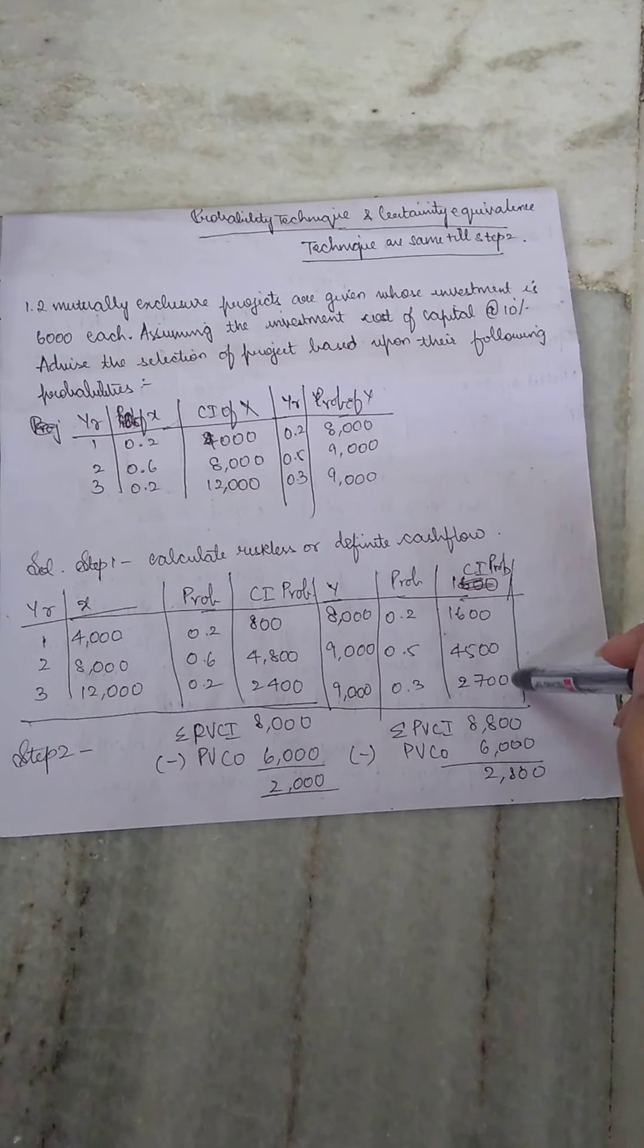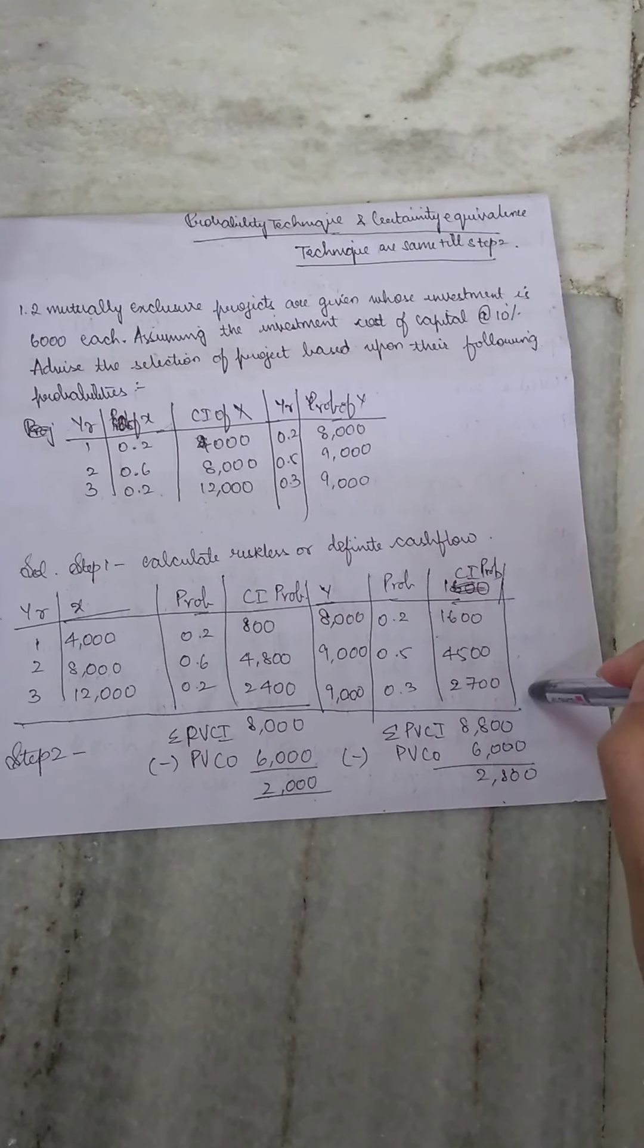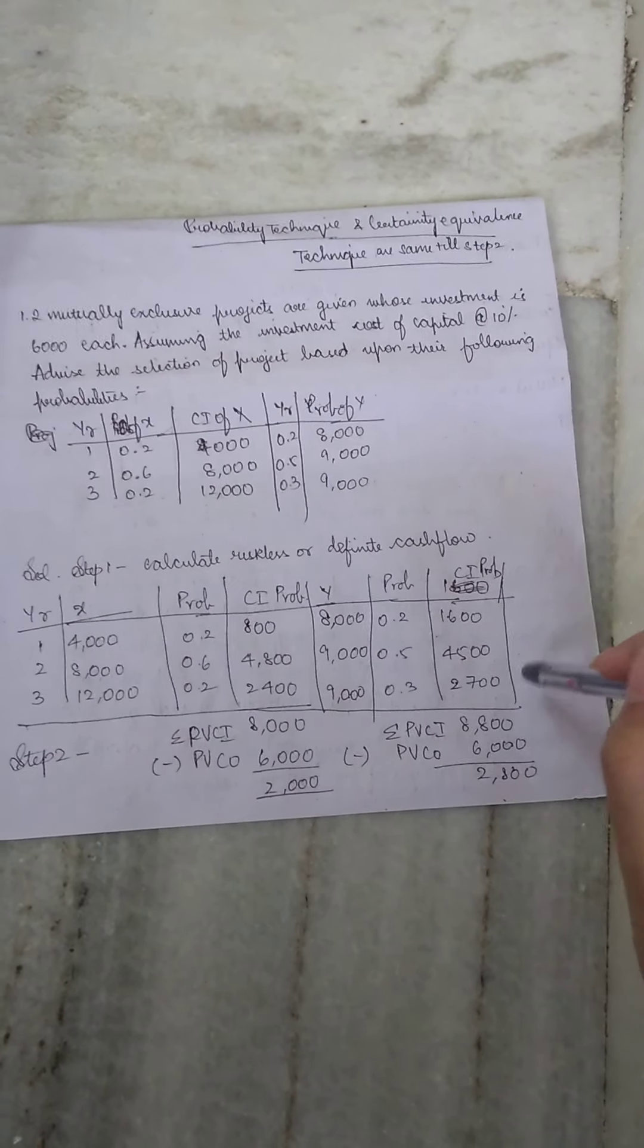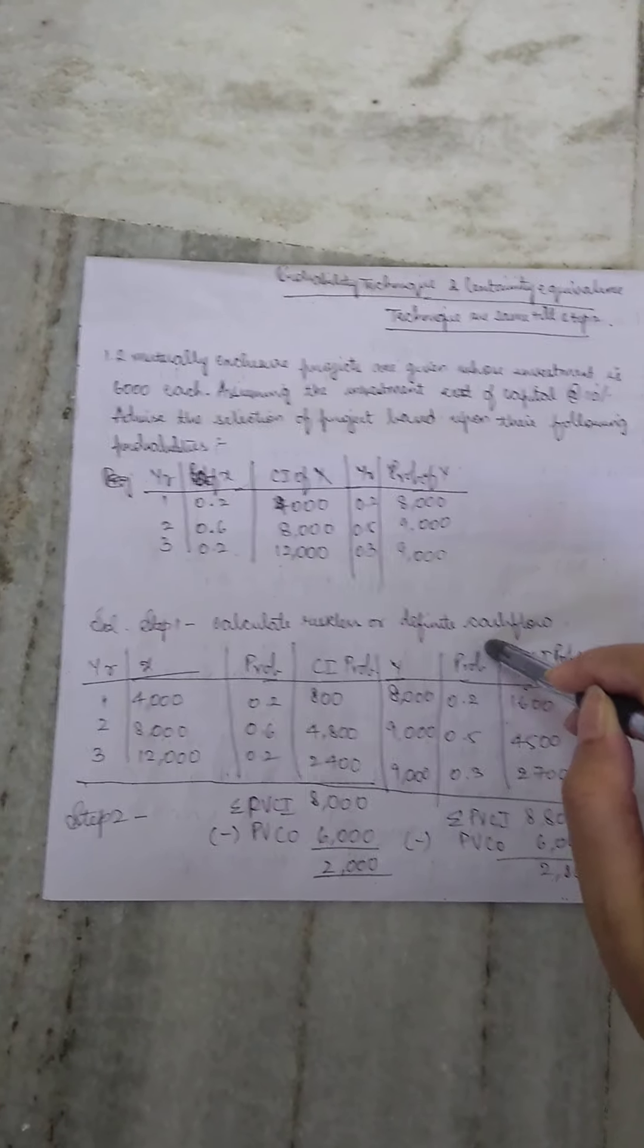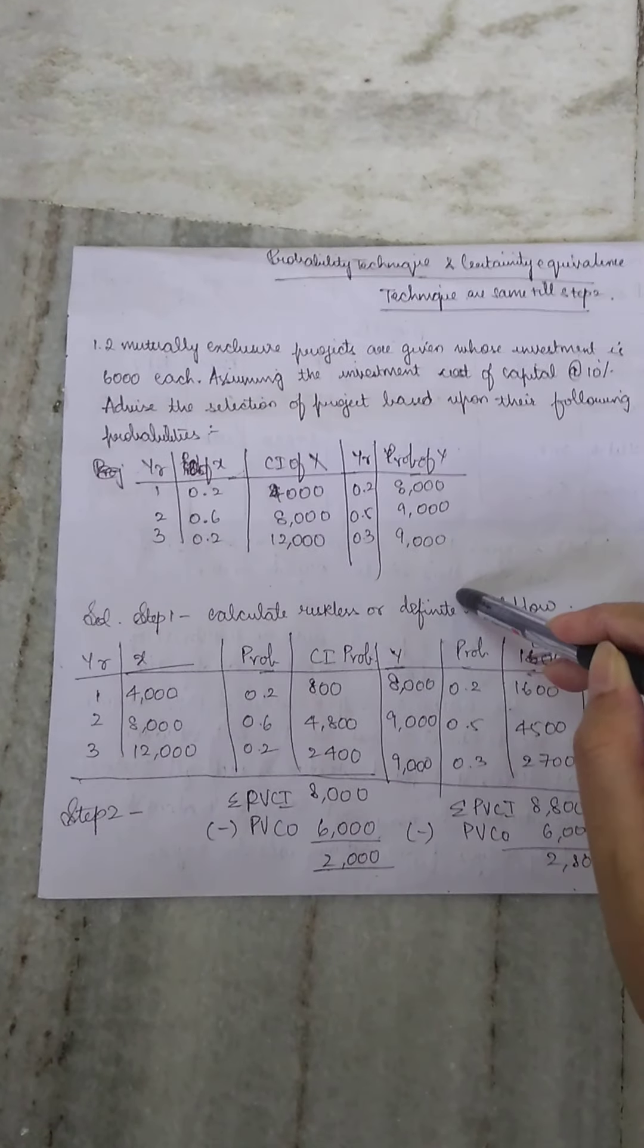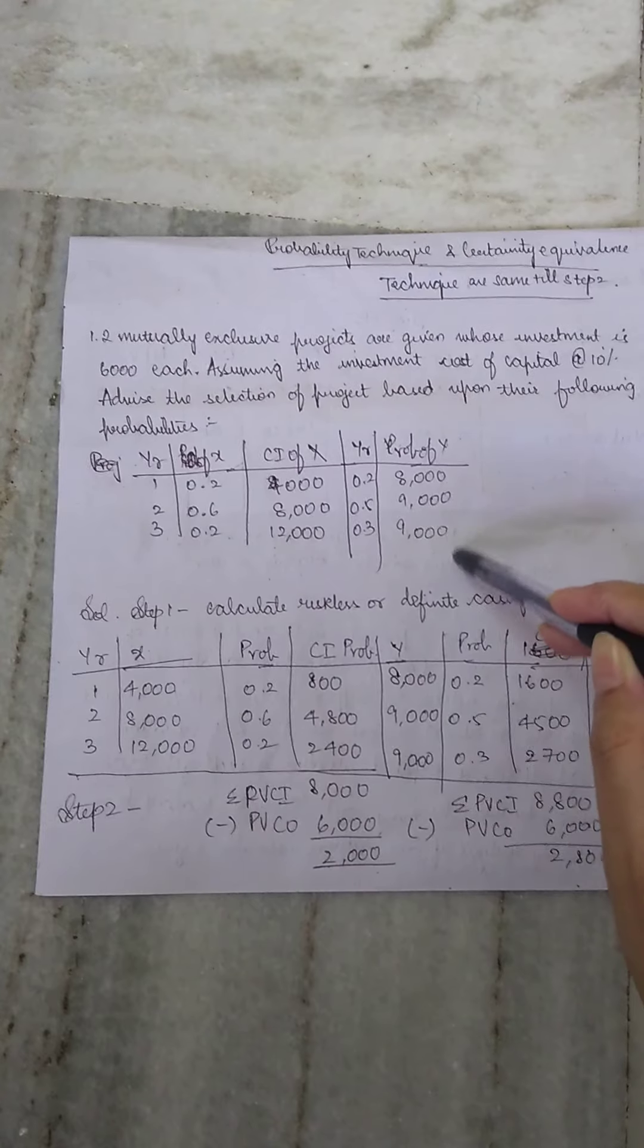Okay, in certainty equivalence what do we do? We calculate the certain amount which we are supposed to get, which we are certain that it will come back to us. And in probability technique when the investor is investing an amount, he has been given a particular percentage or a profitability index.